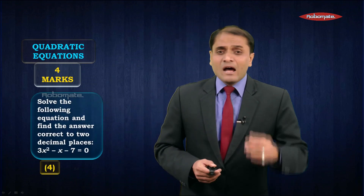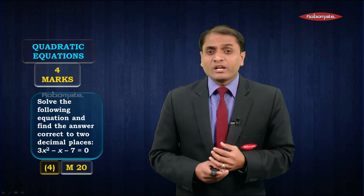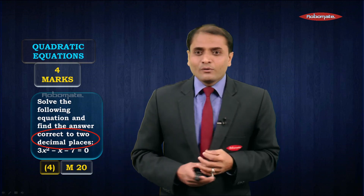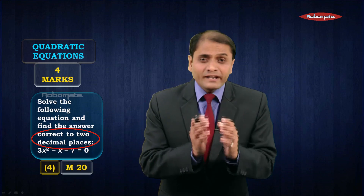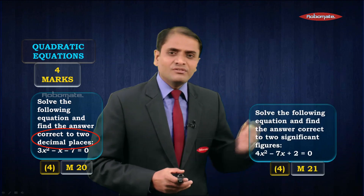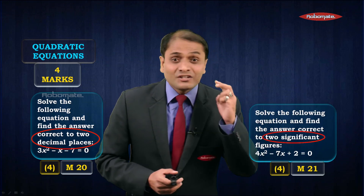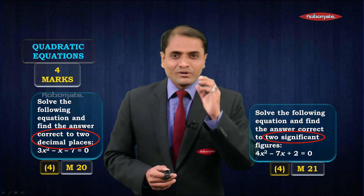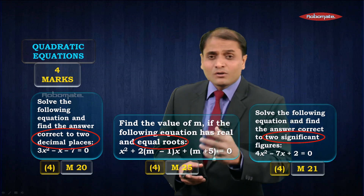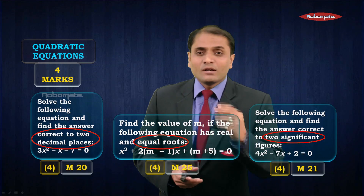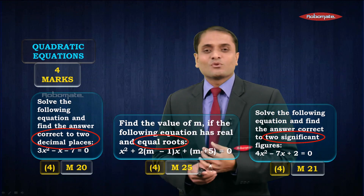The next chapter is quadratic equations. You can expect a question of four marks. Normally they ask you to solve the quadratic equation using the formula method. If you see the question, they may say 'write down the answer correct to two decimal places' or 'correct to two significant figures' — accordingly you have to present your final answer. You can also have a question based on the concept of equal roots, where a quadratic equation has equal roots and you have to find the value of an unknown, m. One such question of four marks can be expected.